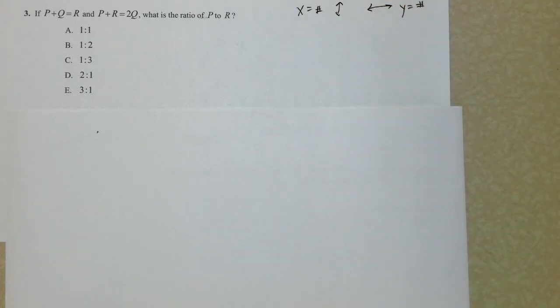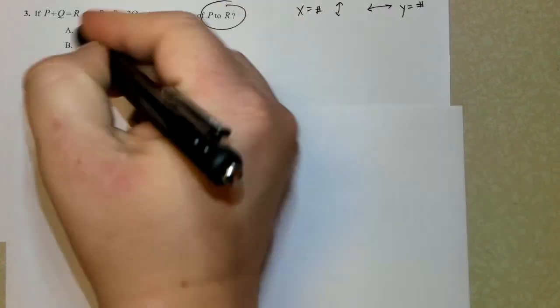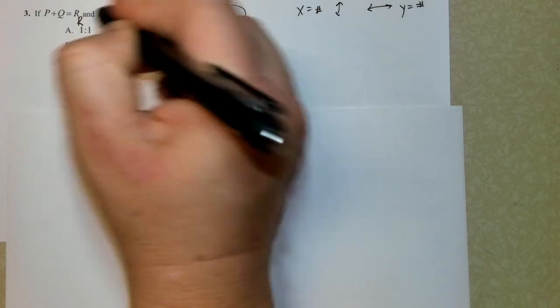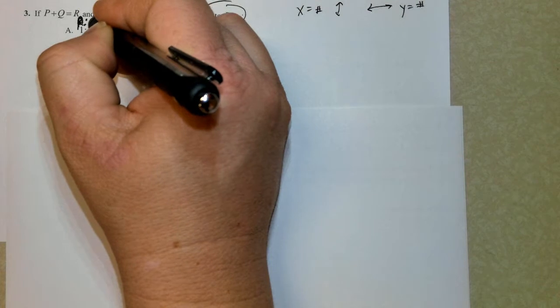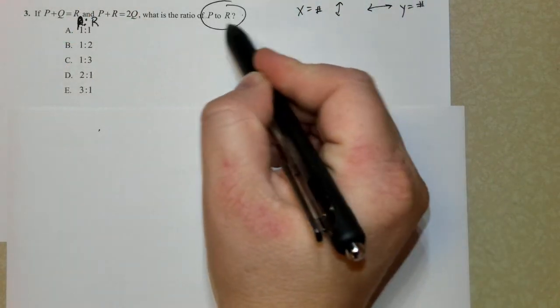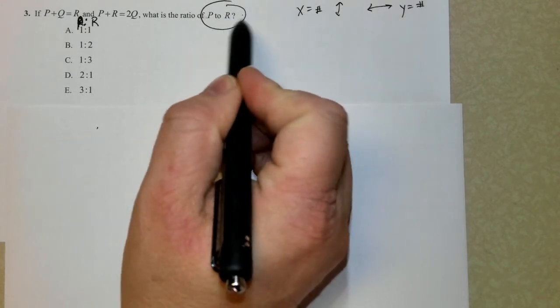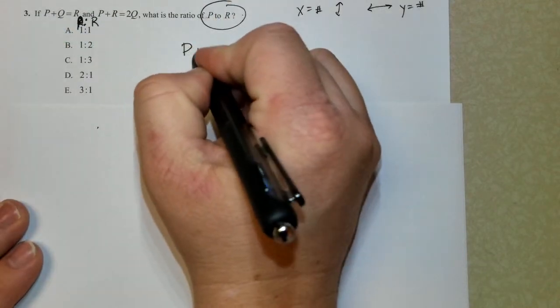Number 3. Now this was a tricky one. If p plus q equals r and p plus r equals 2q, then what is the ratio? Here is what I'm going to do. I want you to circle this. I know my final answer wants it in the order of p to r. My final answer needs p on the left and r on the right because that's how it's given to us. So does this say anything about q? It says nothing about q. So I want to find a way to eliminate the q's.